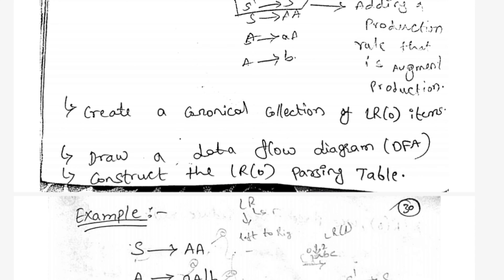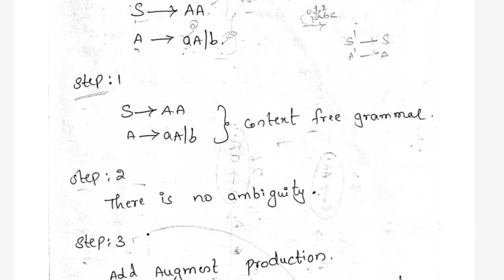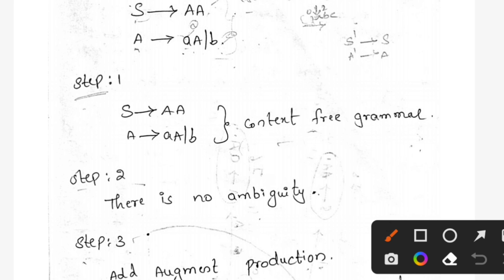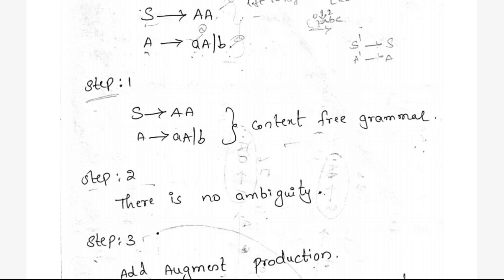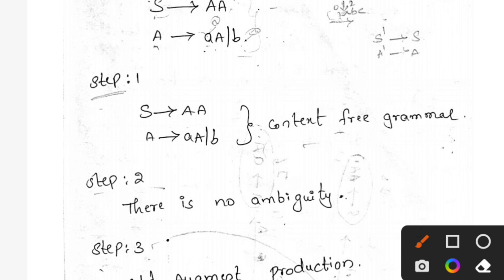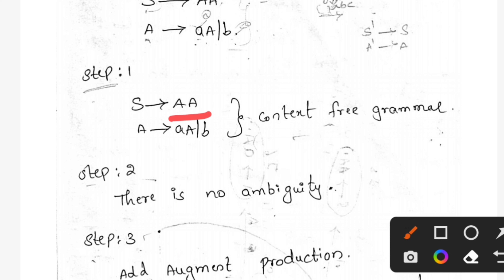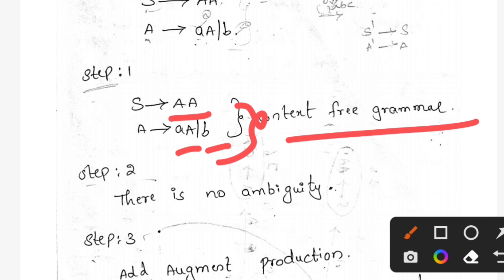Let's see one example for LR(0) parsing. We have three production rules. You need to construct the parser. First step: check if this is a context free grammar. S → AA, A → aA, and A → b. This is a context free grammar.